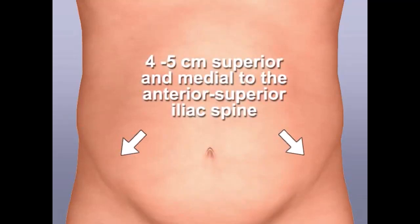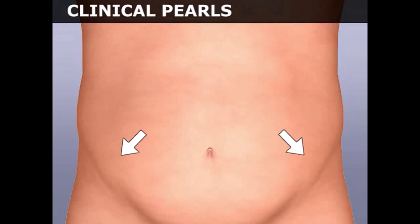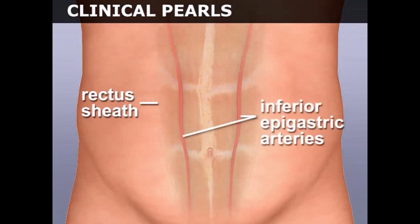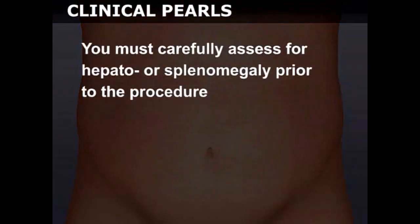If a right or left lower quadrant approach is used, the needle must enter lateral to the rectus sheath in order to avoid injuring the inferior epigastric arteries. Additionally, you must carefully assess for hepato- or splenomegaly prior to the procedure.